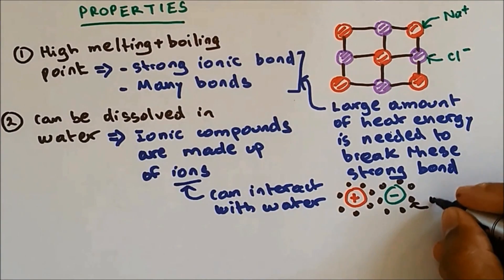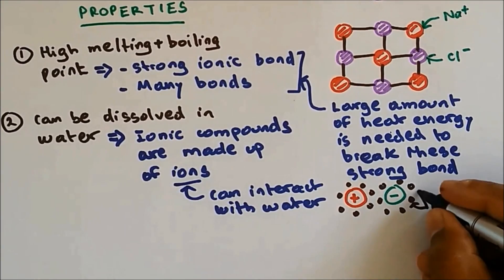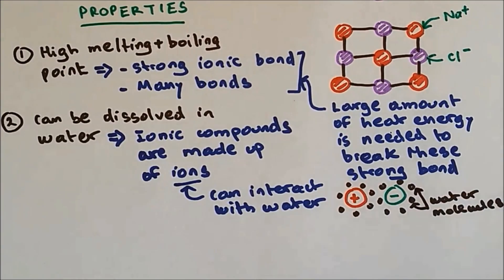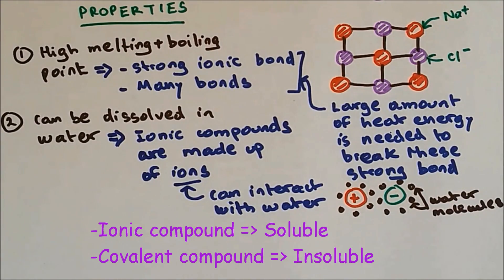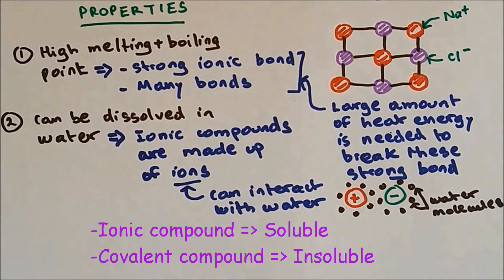These are water molecules. The water molecules surround the ions, keeping those ions separated. In a covalent bond, ions are not formed, so any substance made up of covalent bonding will not dissolve in water.